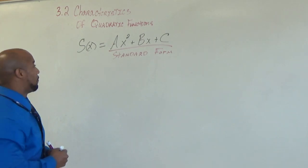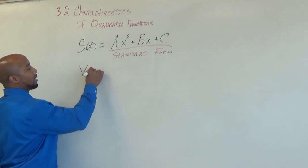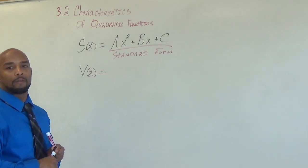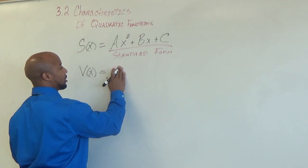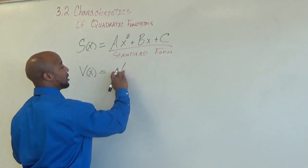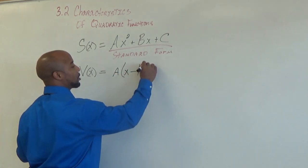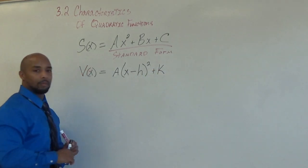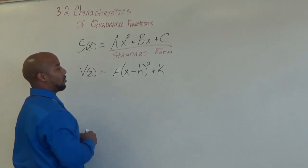Now, the vertex form — I will put V of x. The vertex form for a quadratic function is simply A times, parenthesis, x minus h, squared, plus k. This is called my vertex form for a quadratic function.